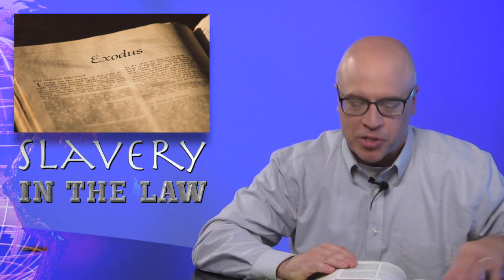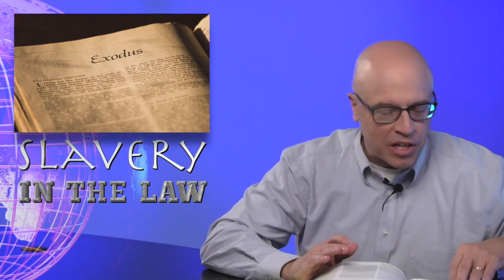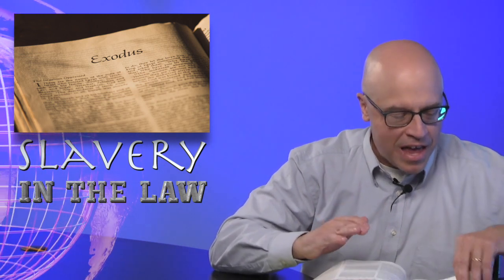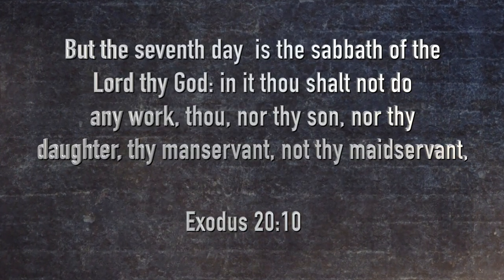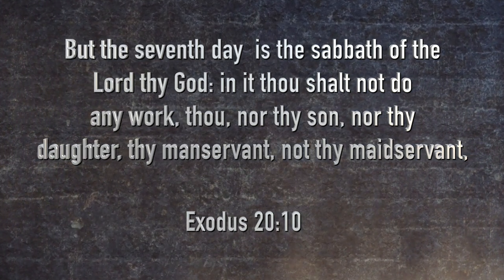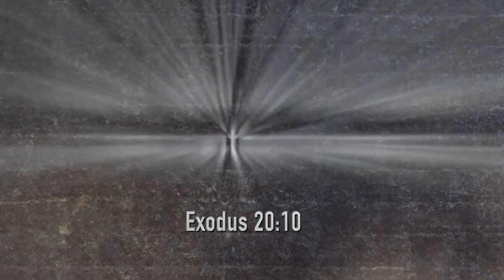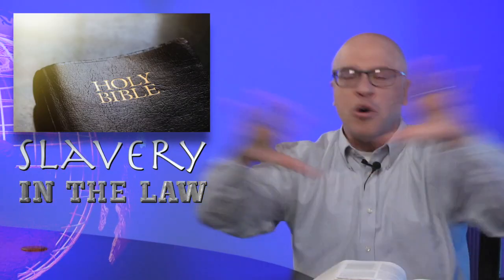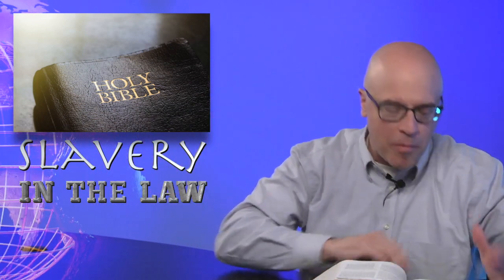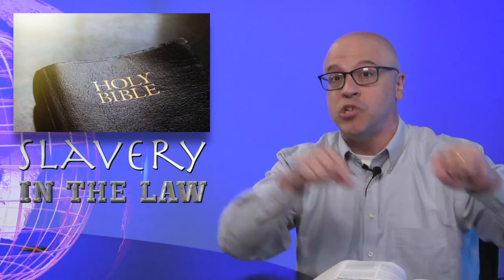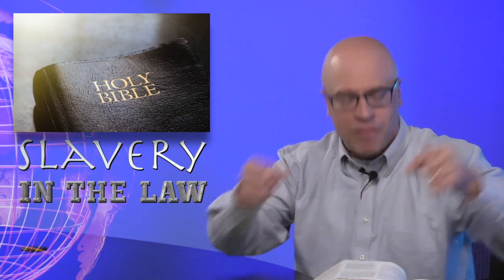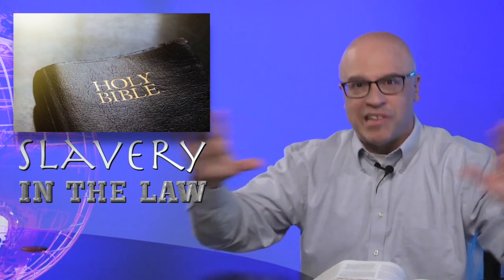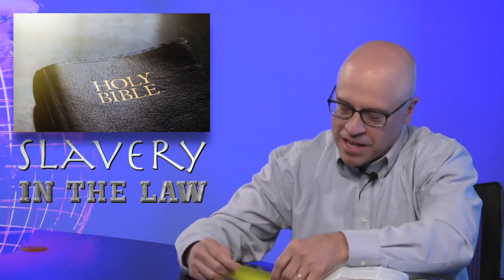And Exodus chapter 20, verse 10, you've probably all read that particular scripture in relation to God's Sabbath commandment. But let's take a closer look at it with the backdrop of what we're discussing today. Exodus 20, verse 10: But the seventh day is the Sabbath of the Lord thy God. In it thou shalt not do any work, thou nor thy son, nor thy daughter, thy manservant, nor thy maidservant, nor thy cattle, nor the stranger that is within thy gate. Again, showing you that God's law was over everyone in the land of Israel. They had to abide by it. And here, manservant and maidservant, the same word is used for bondmen and bondwoman that we read earlier, which meant slave. It's talking about your slaves here in the land of Israel. They get off on the Sabbath also.